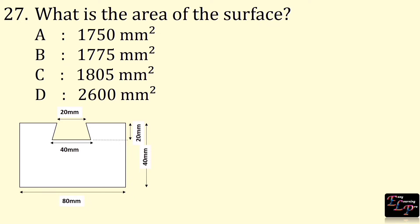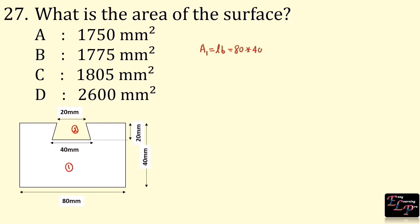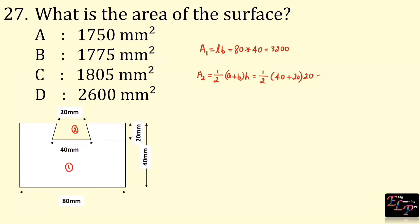What is the area of the surface? Here we have two shapes: first is a rectangle, second is a trapezoid. Area of the rectangle is length × breadth = 80 × 40 = 3,200. Area of the trapezoid is ½(a + b) × h = ½ × (40 + 20) × 20 = 600.